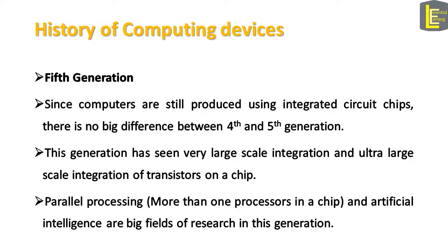Since computers are still produced using integrated circuit chips, there is no big difference between the 4th and 5th generation. But currently, the number of transistors has increased tremendously on a single chip — from a few thousand transistors, modern computers have millions of transistors on a single chip. This is also known as very large scale integration or ultra-large integration of transistors. Modern computers also come with multiple chips in a single processor, known as parallel processing, because more than one processor can work on a single task at the same time. Artificial intelligence is a very hot topic of research in this generation.